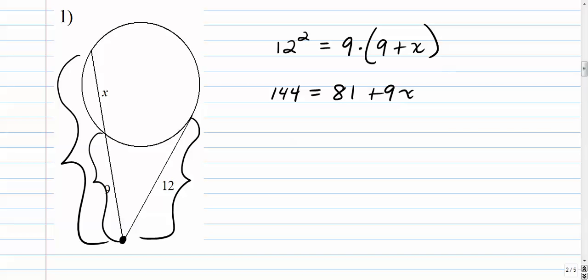Distribute. Distributive property brings that 9 in here, and in here, 81 plus 9x. Subtract 81 from both sides. We get 63 equals 9x, x is 7.